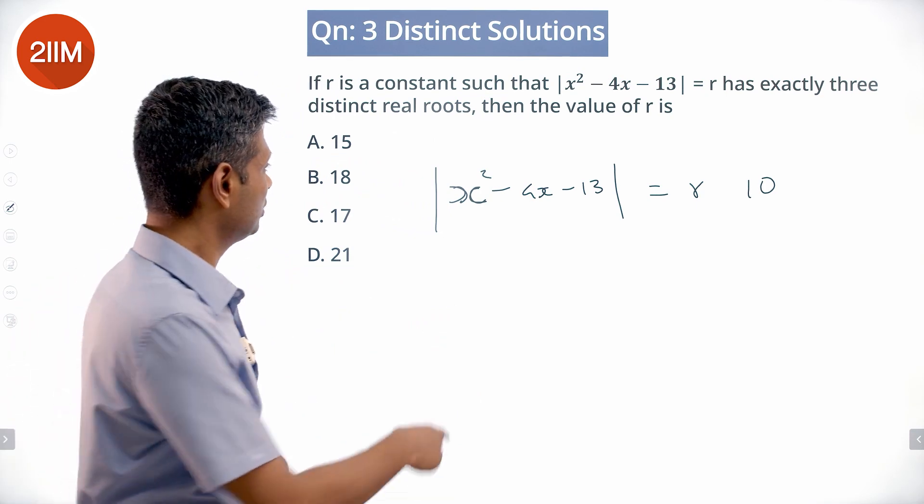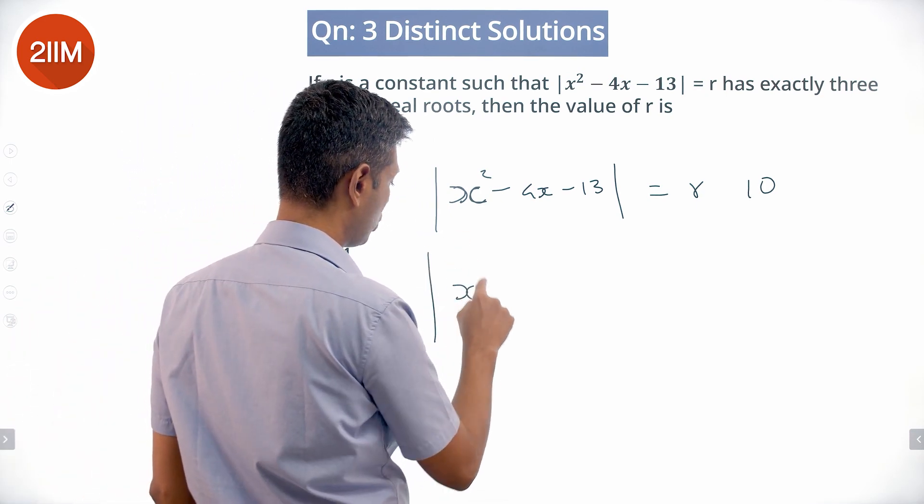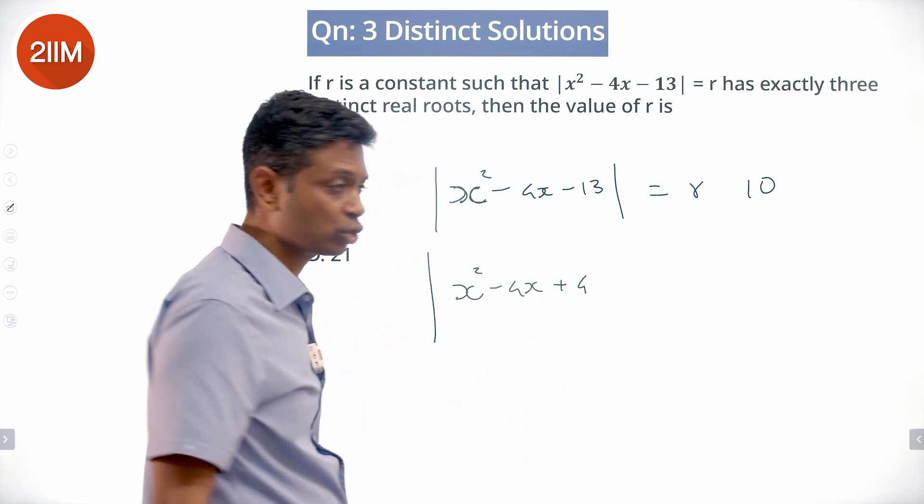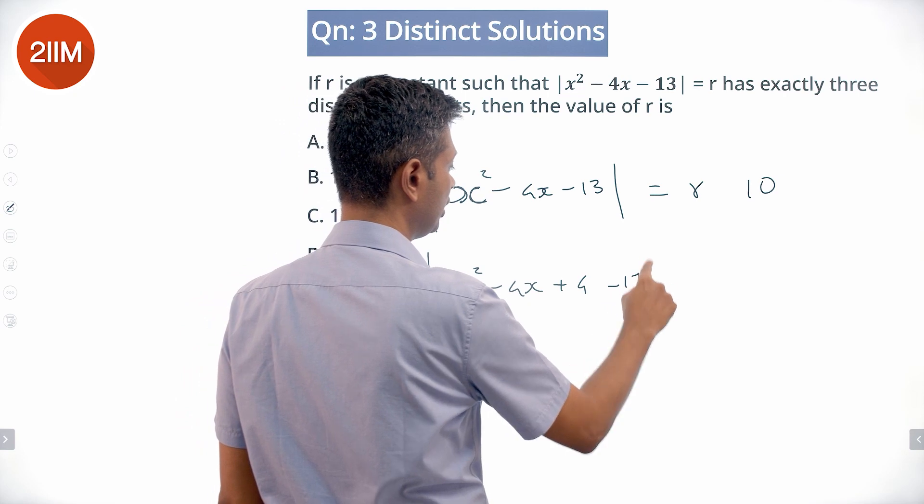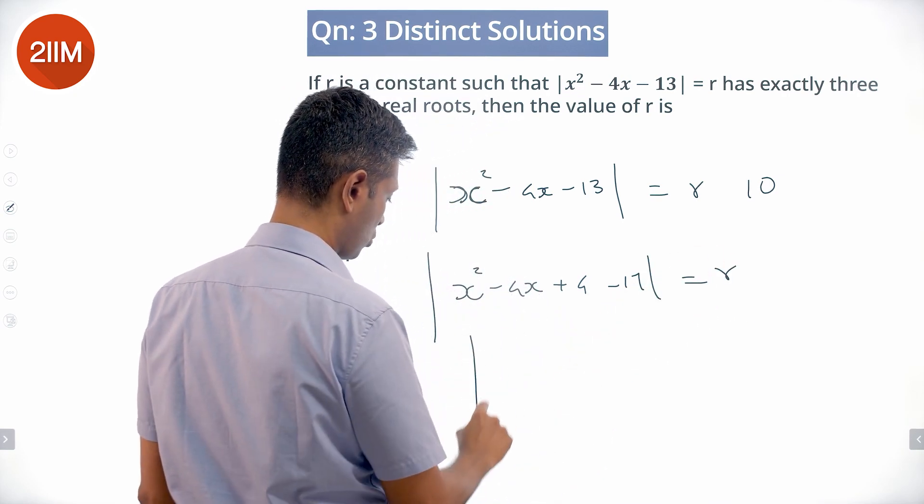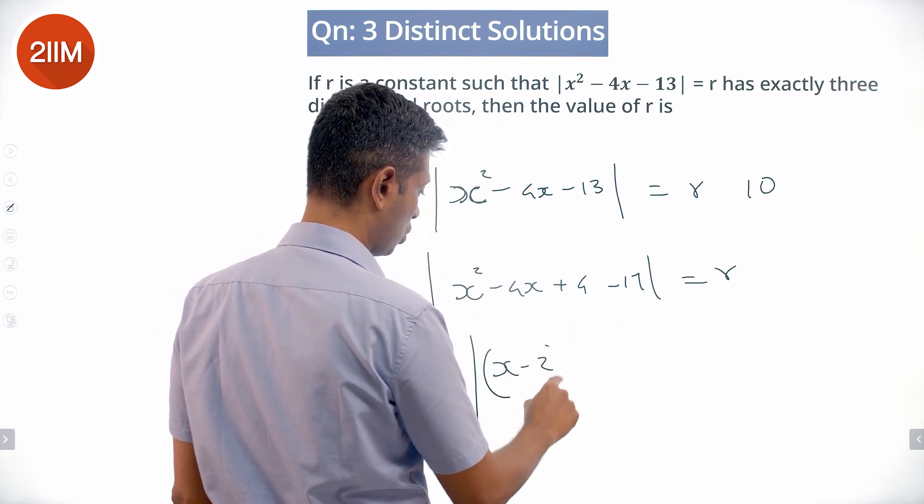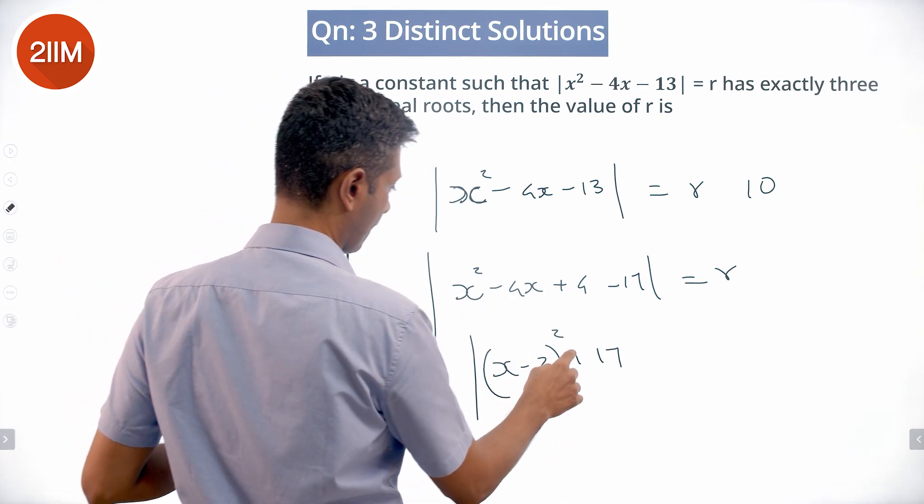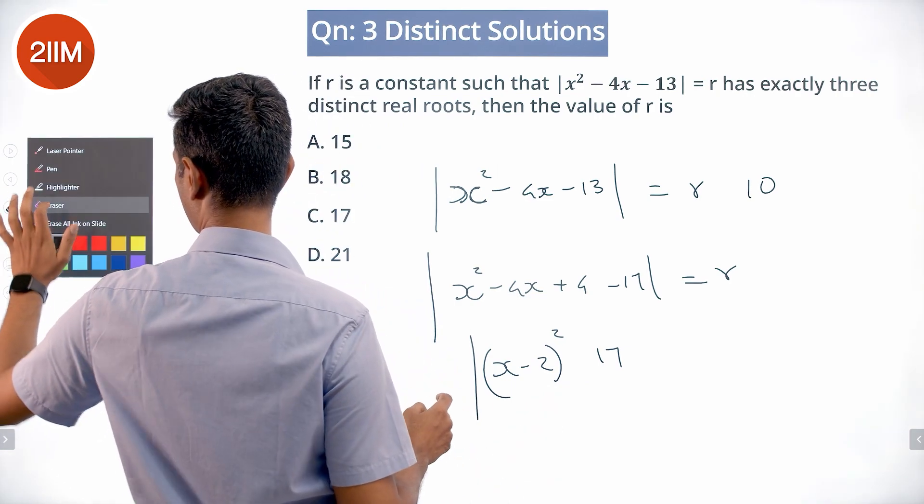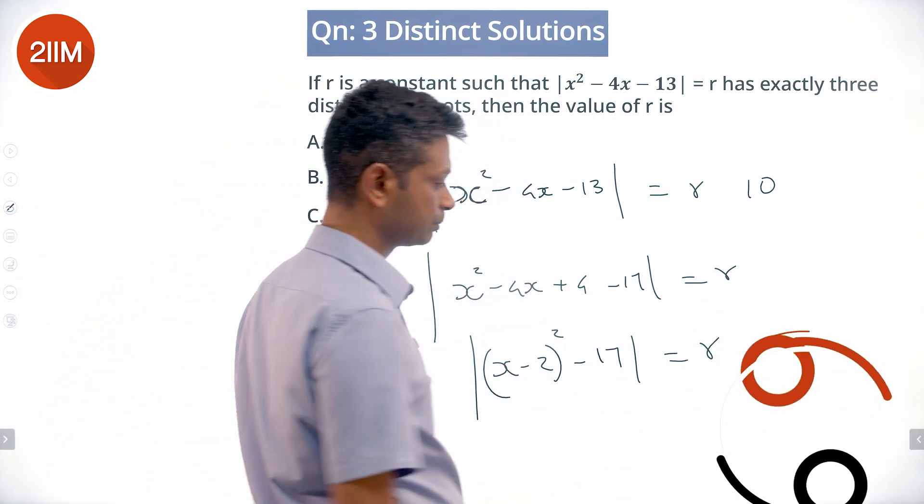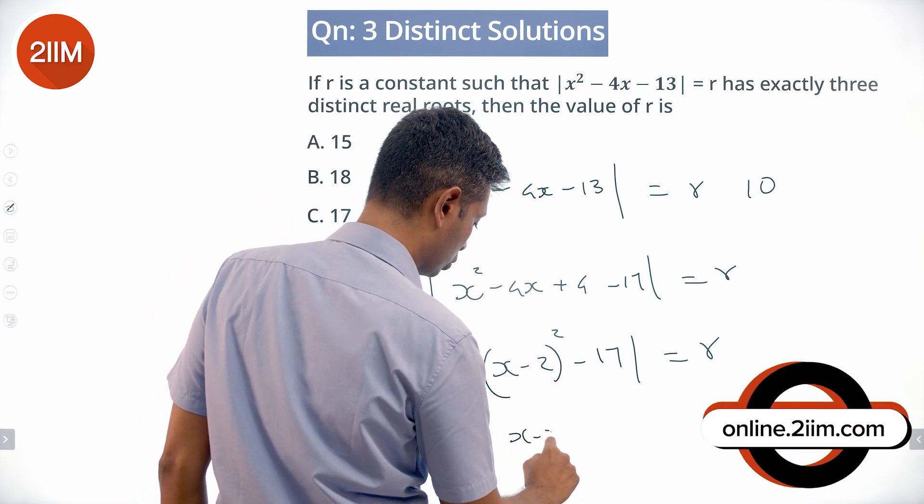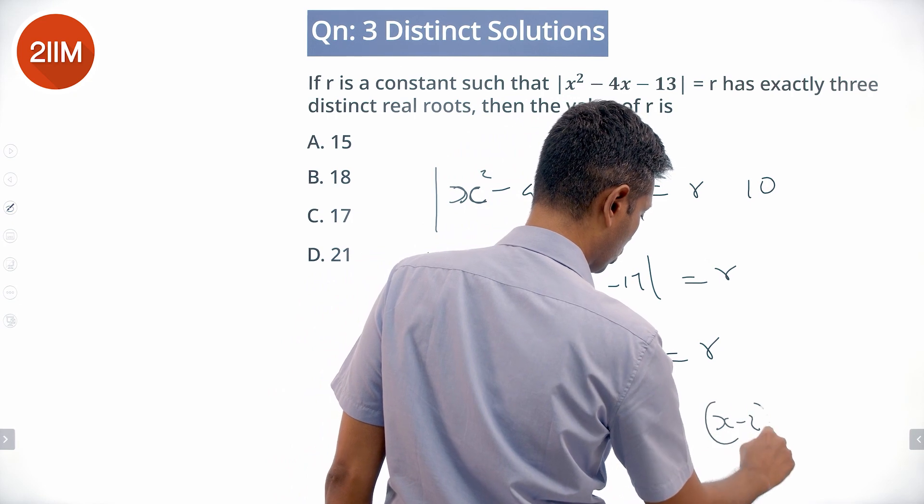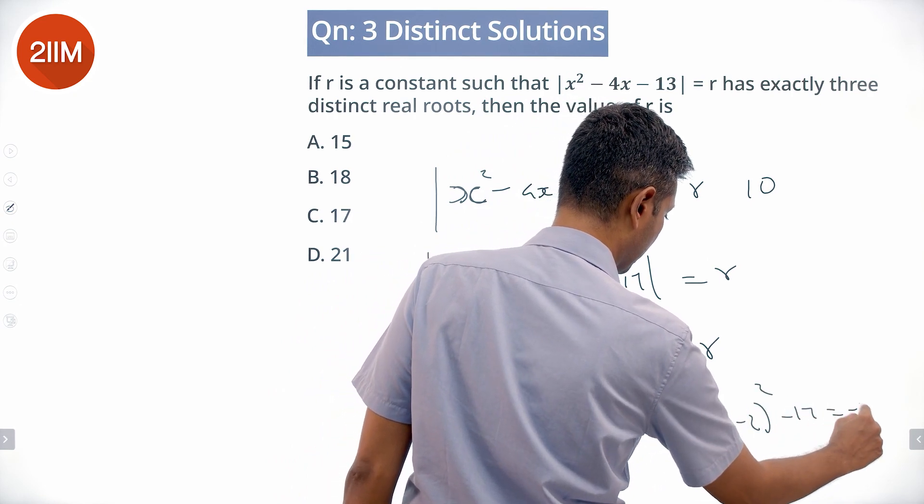So let's simplify this thing by completing the square. x² - 4x + 4 is (x - 2)² - 17 = r, or |(x - 2)² - 17| = r.